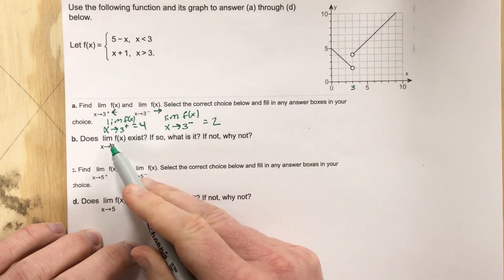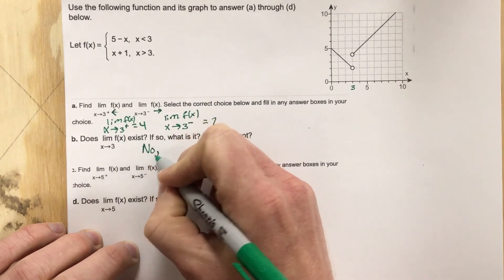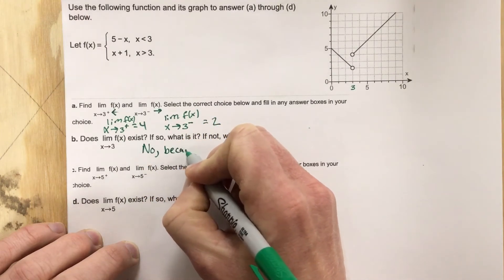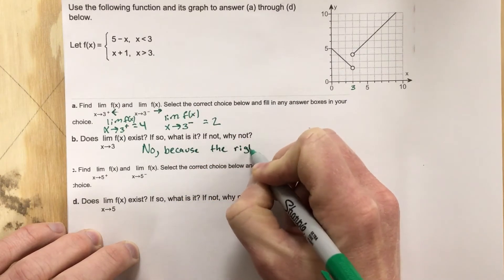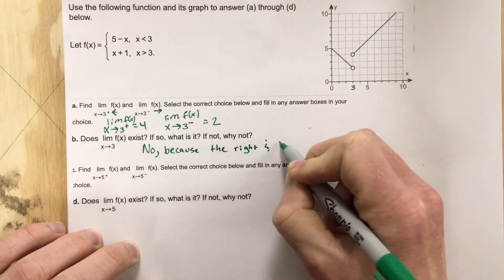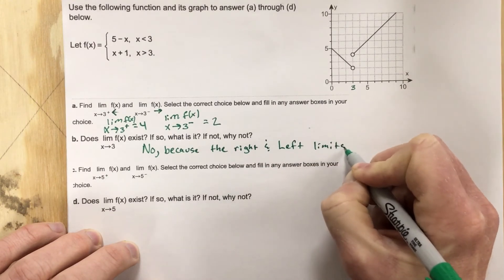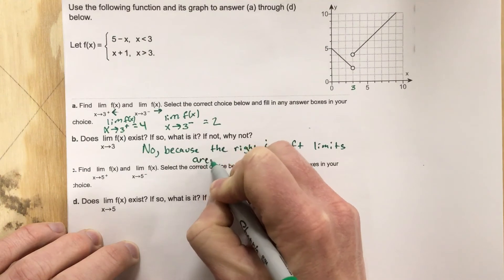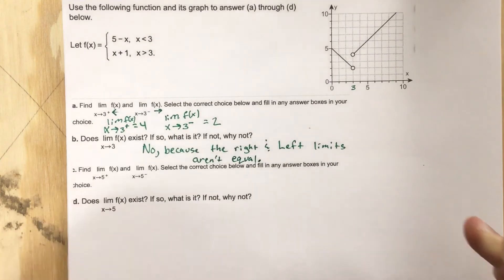It says, does the limit as x approaches three of f of x exist? The answer to that is no. No, because the right and left limits aren't equal. So they have to be equal in order for us to have a limit overall.